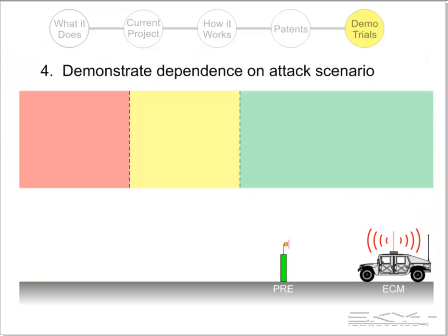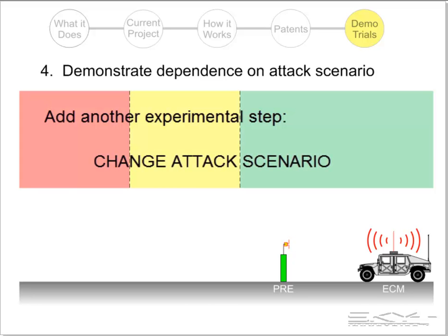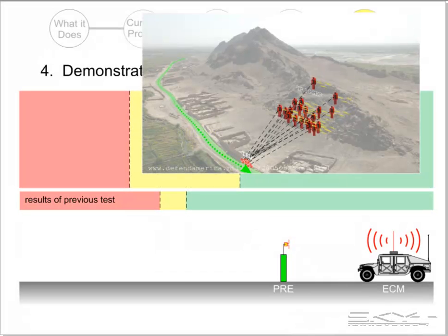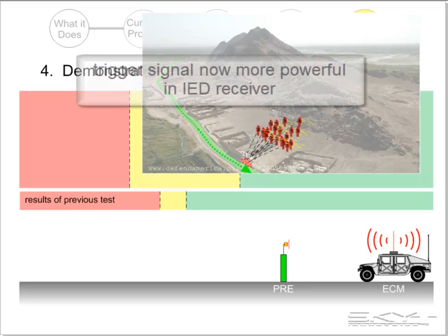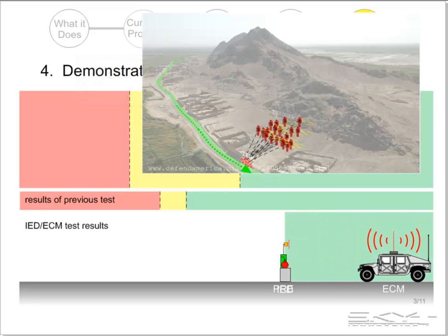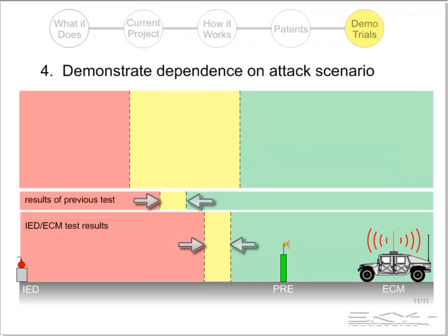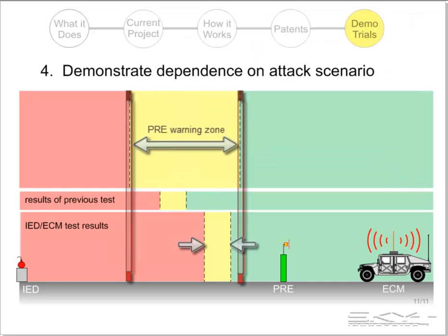This can be graphically illustrated by adding another step to the experiment to demonstrate the effect of changing the attack scenario. Keeping in mind the results of the previous test, we conduct another experiment in the same way but with one change: we move the trigger man closer to the IED receiver, so the trigger signal seen by the IED receiver is now more powerful than before. Because the trigger man's location has changed, the protection range has also changed. However, the new protection range still lies within the warning zone predicted by the PRE device — we get two answers, but they're both inside the PRE device's warning zone.